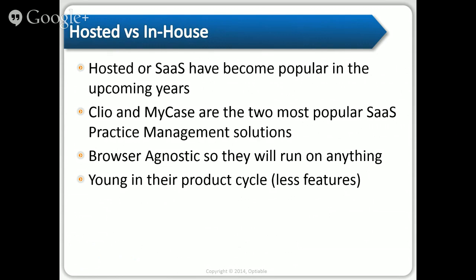For example, one complaint I heard about Clio — not my complaint, but from a lot of lawyers — was that the reporting features are somewhat sparse and they wished for greater reporting. Clio is constantly adding to that. The point is there are trade-offs, and if something matters to you that Clio doesn't offer, you need to check if MyCase or Rocket Matter does — they don't all develop at the same rate with the same features. The only way to find out is to make a list of what you're looking for and see if those products can do it.